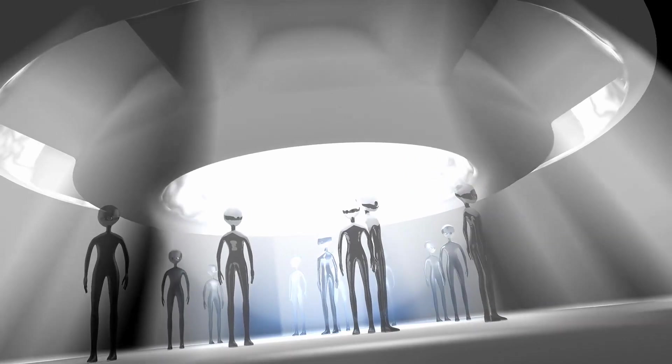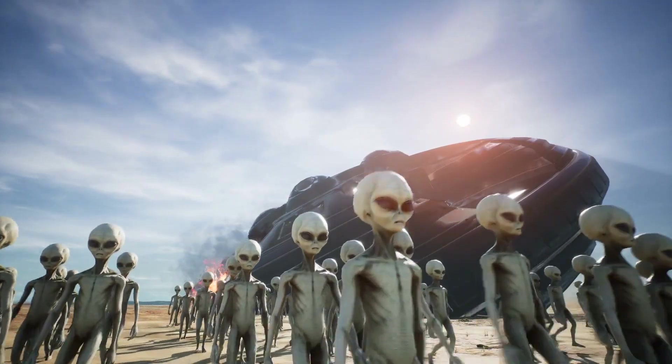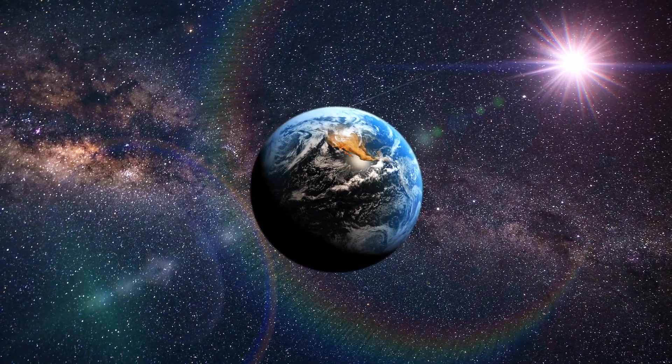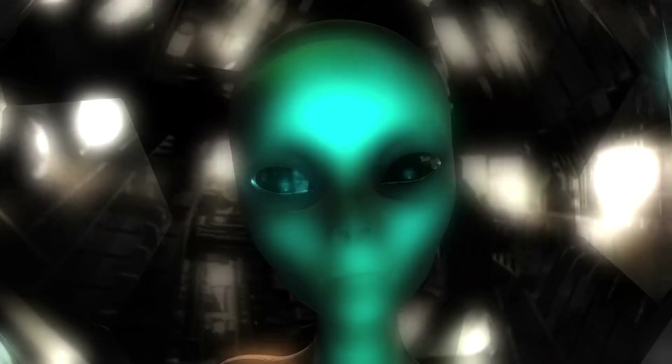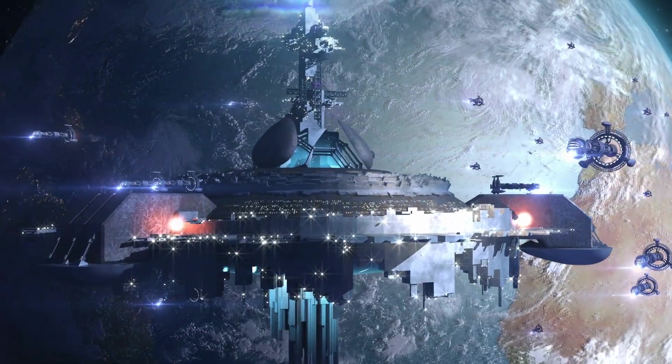Thinking about aliens visiting Earth is super cool, right? But it makes you wonder, how do they even get here? Space is massive. I mean, one light year is like going around Earth 32 million times. And since aliens probably don't have magic powers, their spaceships have to follow the rules of space when they travel from their planet to ours.